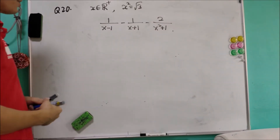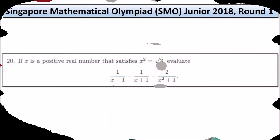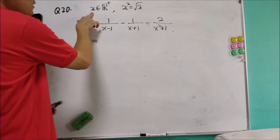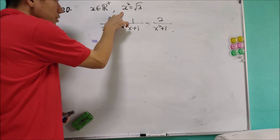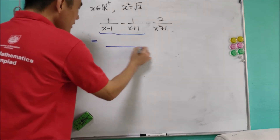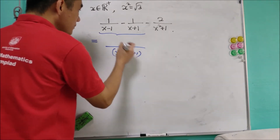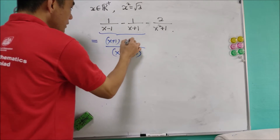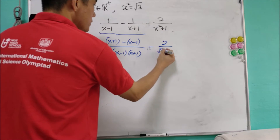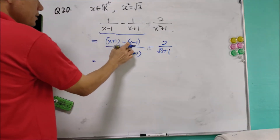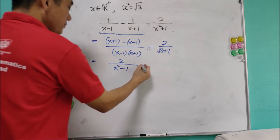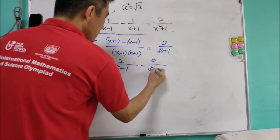Question 20 is a rather simple question. Given that x is a positive real number such that x squared equals square root of 3. The expression can be simplified as: (x minus 1)(x plus 1) over something, minus (x plus 1) terms, giving 2 over (√3 plus 1). The x terms cancel off, leaving 2 over (x squared minus 1), minus 2 over (√3 plus 1).